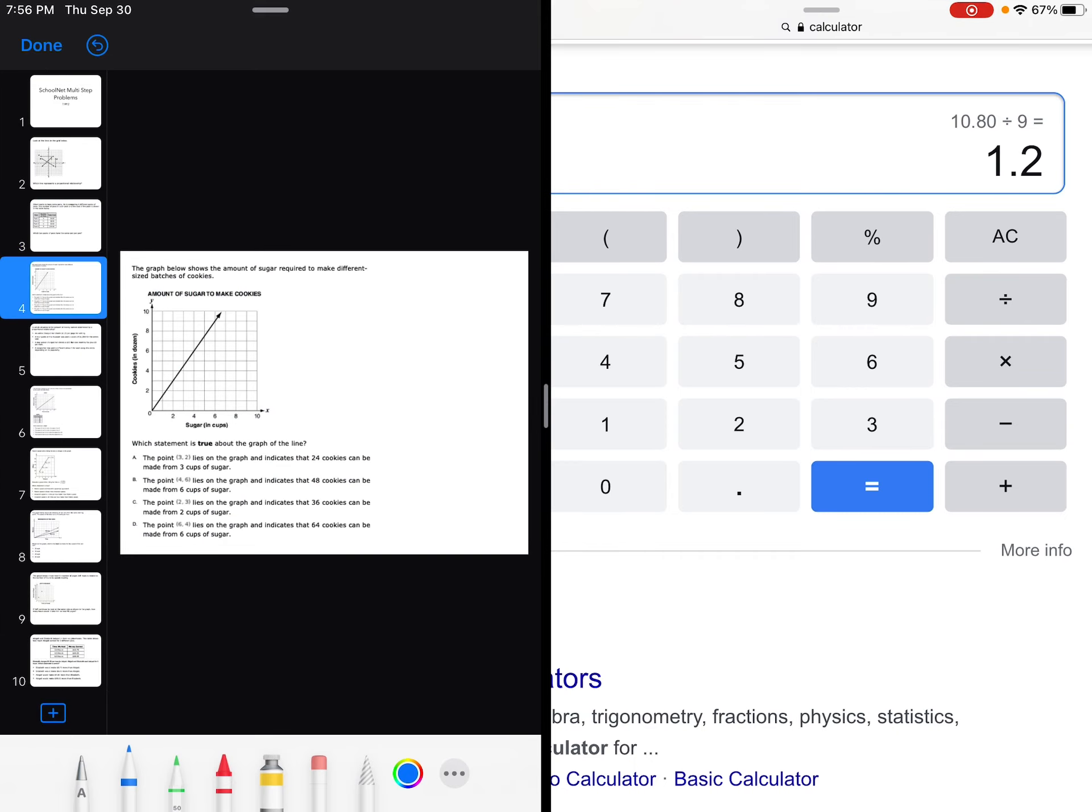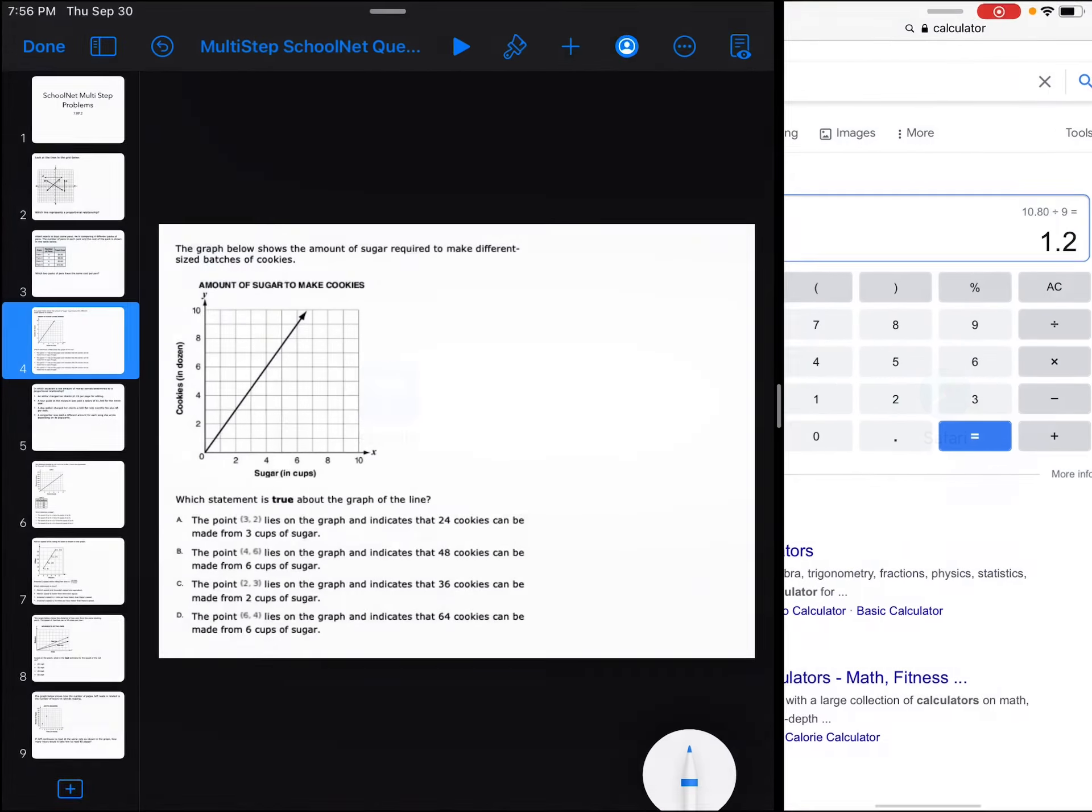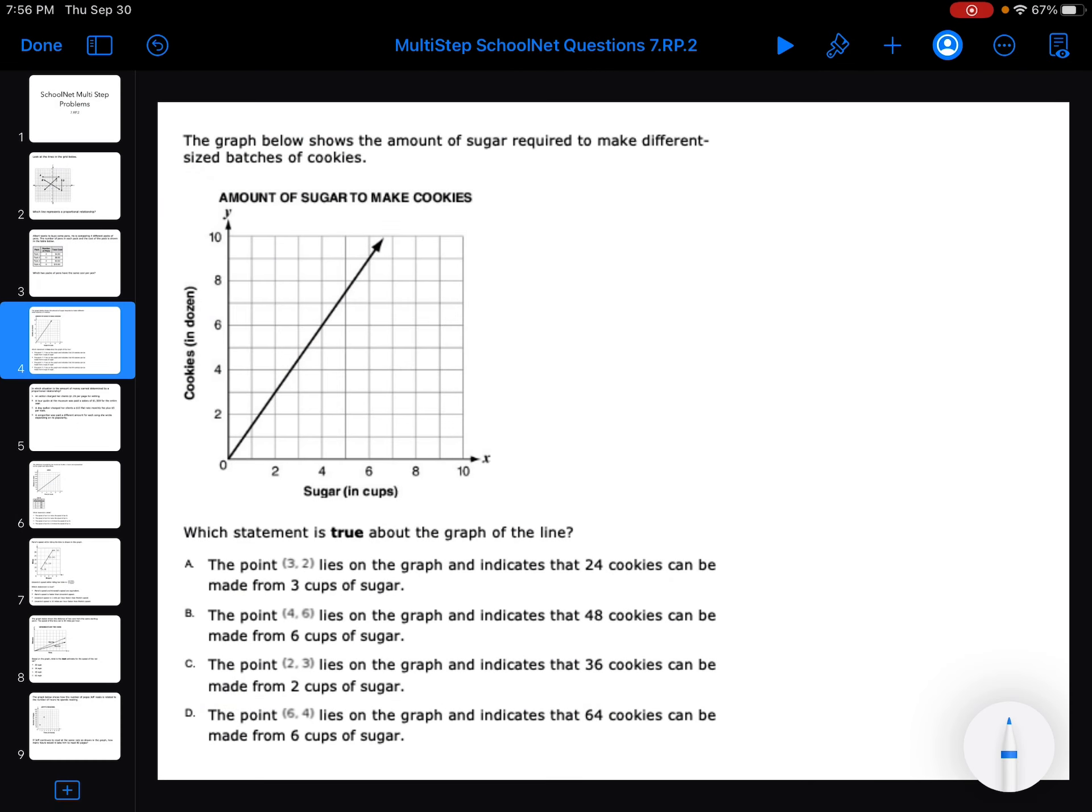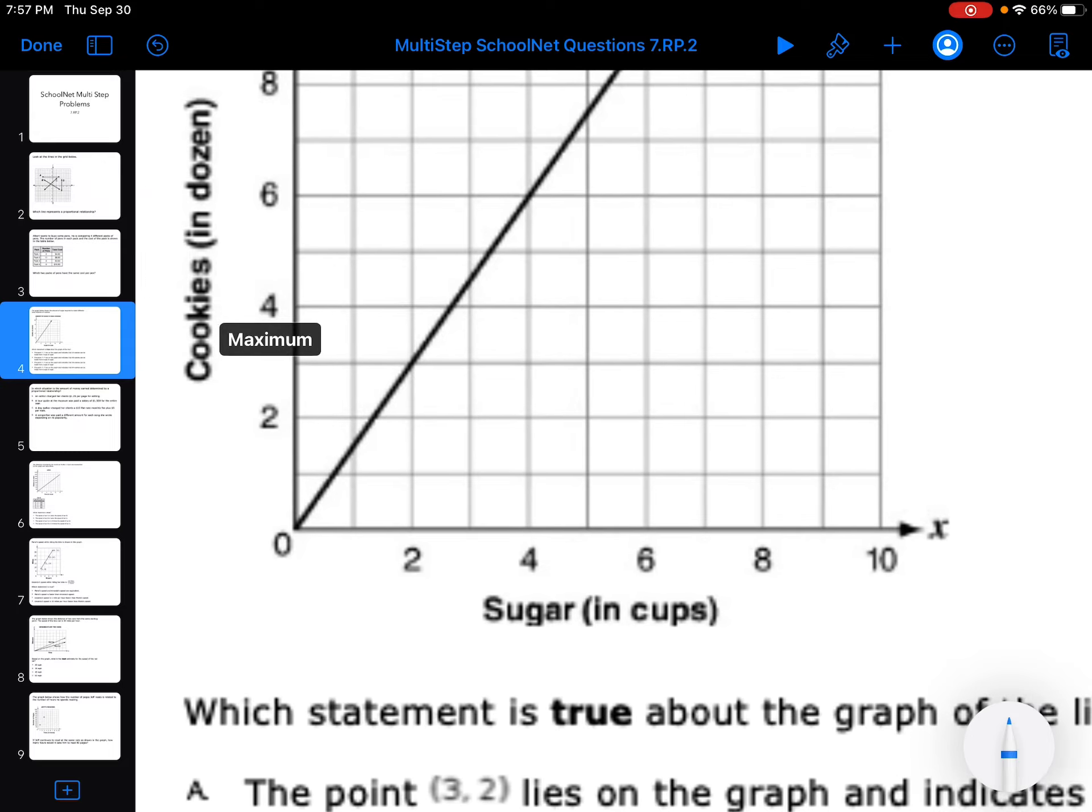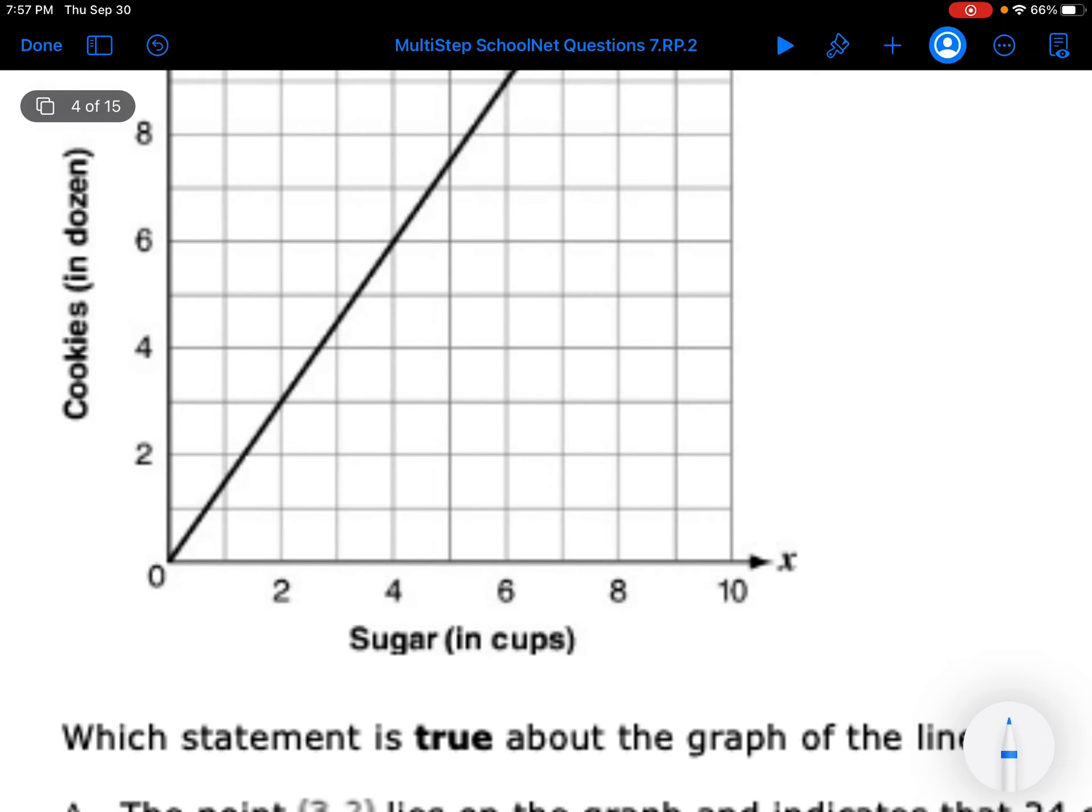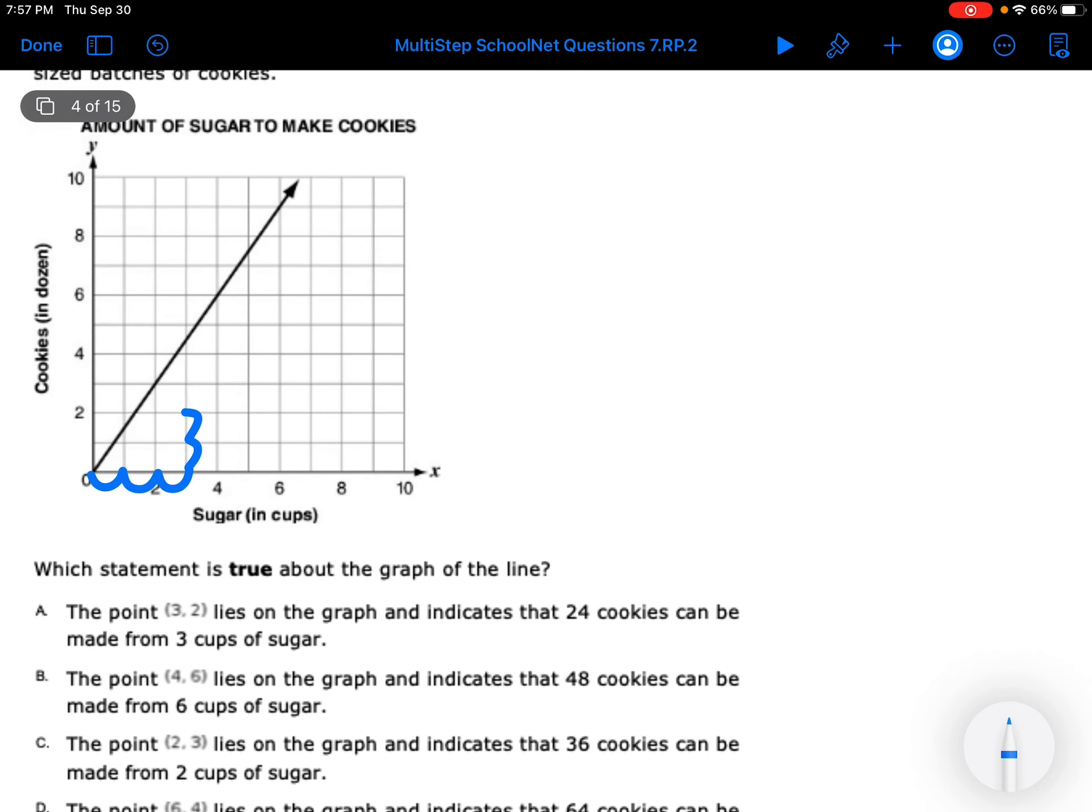For this one they want to know the graph. The graph below shows the amount of sugar required to make different sized batches of cookies. Which statement is true about the graph of the line? The point (3, 2) lies on the graph and indicates that 24 cookies can be made with 3 cups of sugar. So 3, 2 means I go over 1, 2, 3, go up 2. Well, that's not on the line.